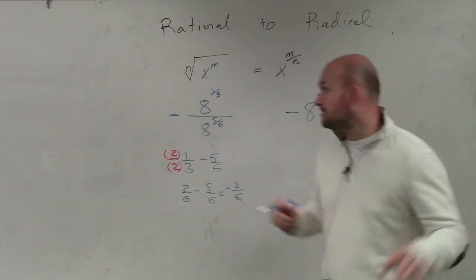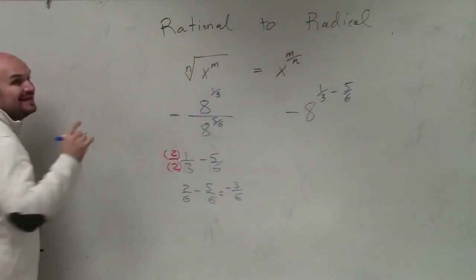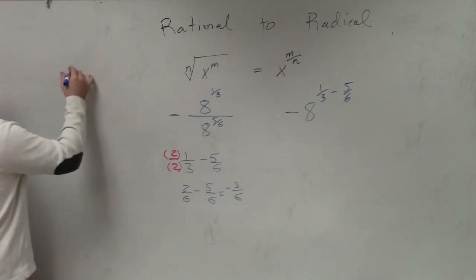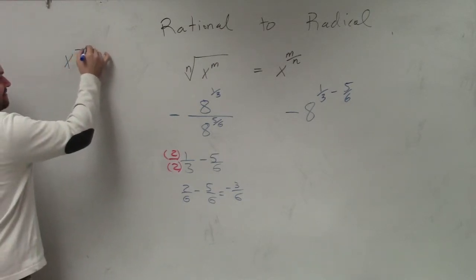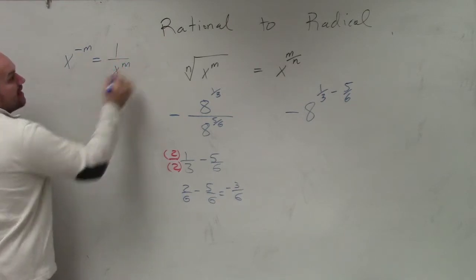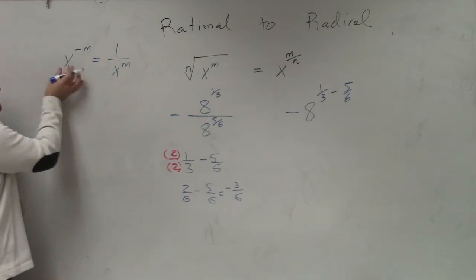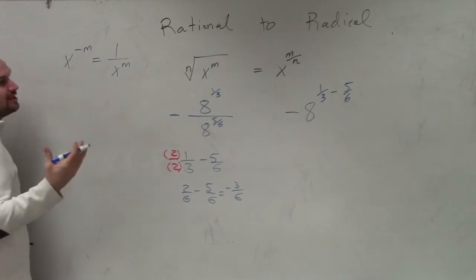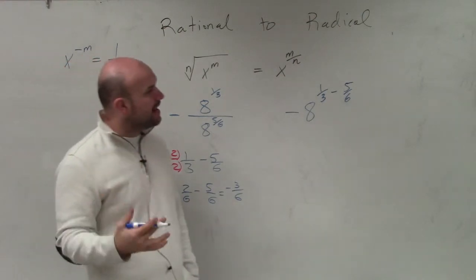Remember, the negative rule works for negative powers. So if I have x to the negative m, that equals 1 over x to the m. Right? So it's not going to matter if the base is negative. It's only working for the power. It only works if the power is negative.